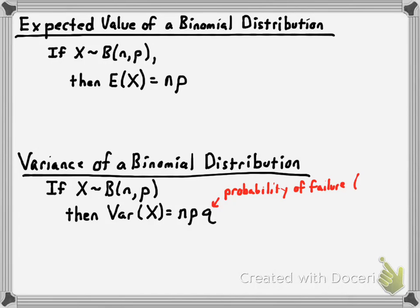In a binomial distribution, q is always equal to 1 minus p, because the chance of success plus the chance of failure has to equal 100%. That's how you calculate expected value and variance. Standard deviation is the square root of variance, so sigma equals the square root of the variance of X.